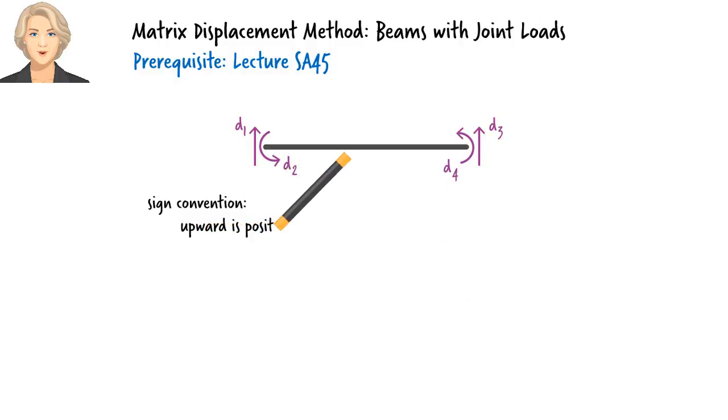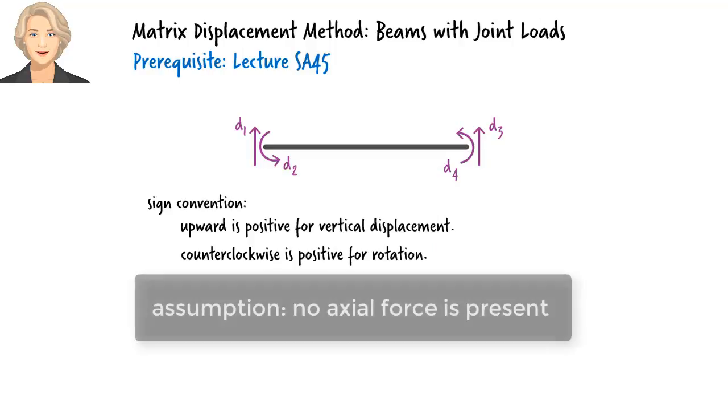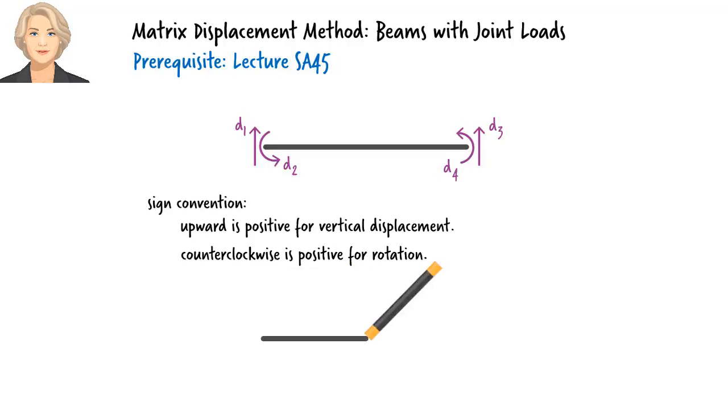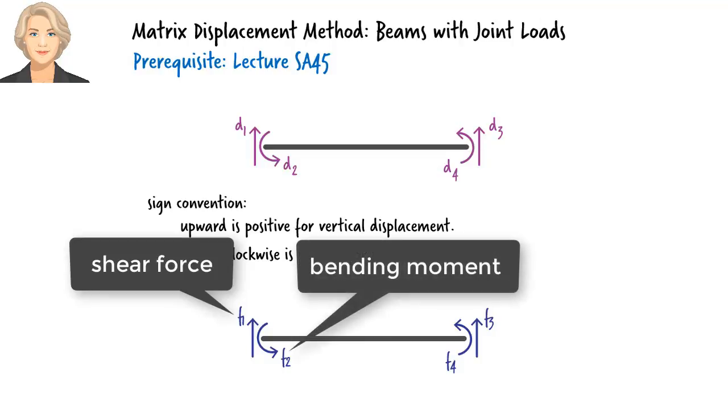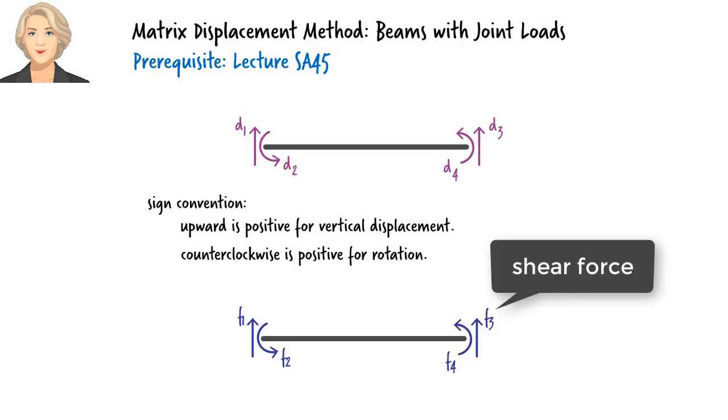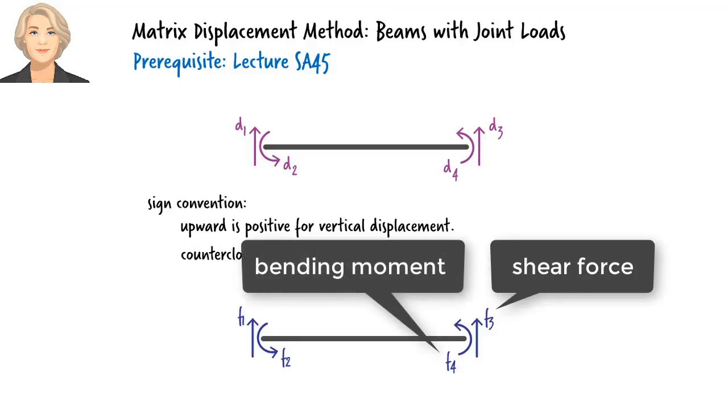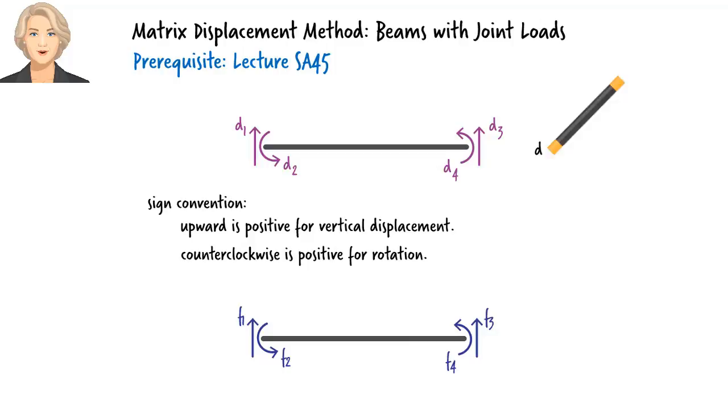For D1 and D3, we define upward as positive. For D2 and D4, counterclockwise is positive. Since we are ignoring axial deformation for now, there would be no axial force in the member. We only have shear force and bending moment present.